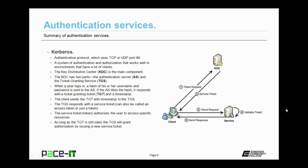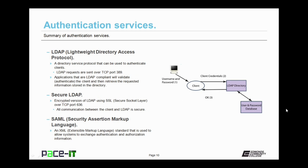Lightweight Directory Access Protocol, or LDAP, is another popular authentication service. It's a directory service protocol that can be used to authenticate clients. LDAP requests are sent over TCP port 389. Applications that are LDAP compliant will validate or authenticate the client and then retrieve the requested information stored in the directory. There is also Secure LDAP, an encrypted version of LDAP using Secure Socket Layer, or SSL, over TCP port 636.